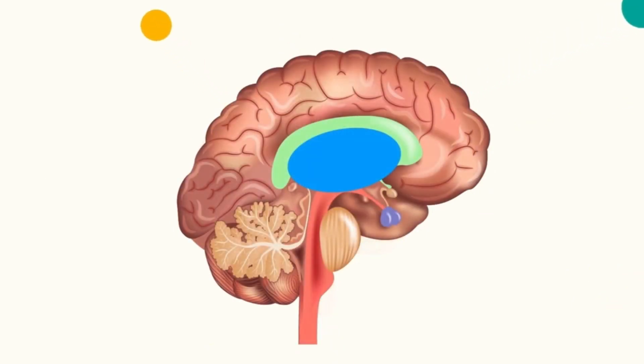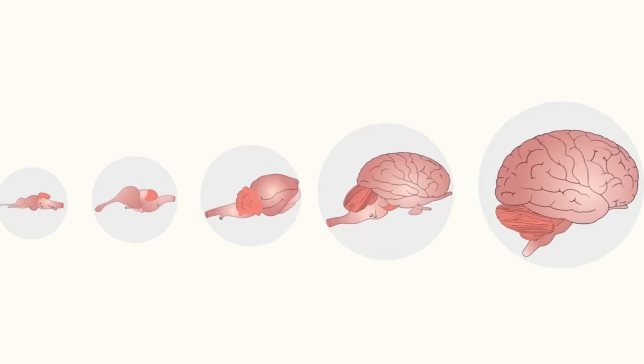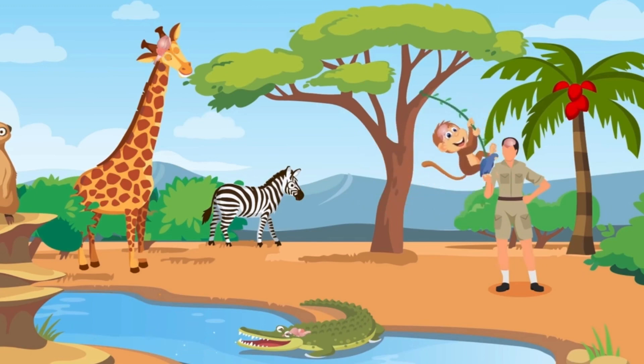Our happy chemicals are inherited from earlier mammals, and we control them with brain structures that all mammals have in common. The mammal brain can't tell you in words why it turns on the chemicals because it doesn't process language. When you know what turns them on in animals, everything makes sense.